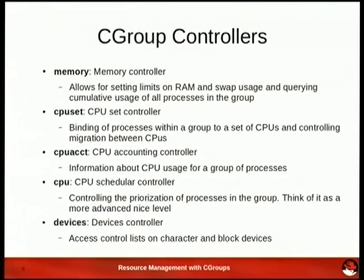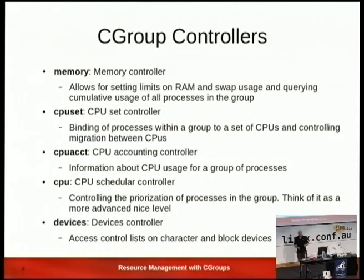Let's break things out a little bit more. You've got your memory controller. CPU set is a bit like task set, where these processes are allowed to utilize particular CPUs on a multicore system. CPU accounting gives you a breakdown at an accounting level of the number of cycles used by systems allocated to a particular group. Then the device controller actually allows you to disallow access to particular devices, aside from using tools like SELinux to control what resources a process or family of processes have access to.